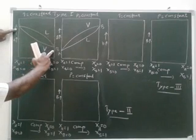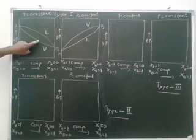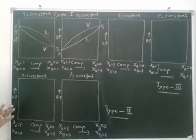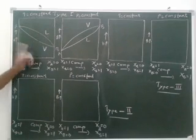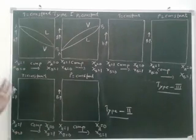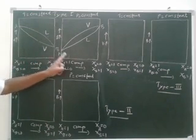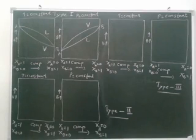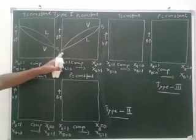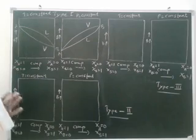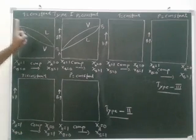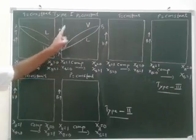These are two pure components, and every composition of vapor pressure is different. This is the first type — Type 1 — that is the boiling point composition diagram derived from the vapor pressure composition diagram. If the vapor pressure is high, the boiling point is low, and if the vapor pressure is low, the boiling point is high.